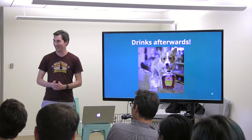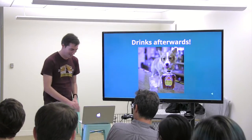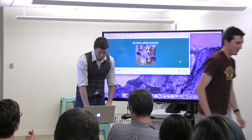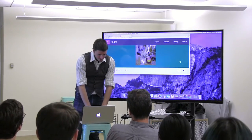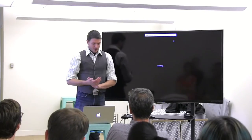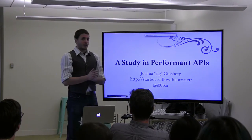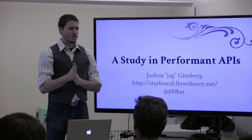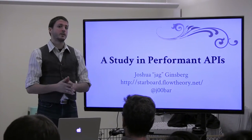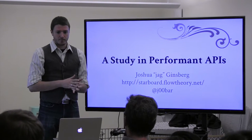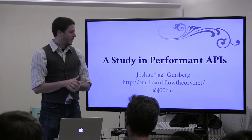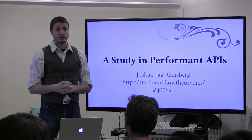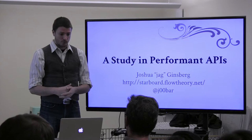Without further ado, I'm going to turn it over to Jag. My name is Joshua Ginsberg. A lot of people know me as Jag. I'm the principal Python Architect at Celerity, a business acceleration consultancy based out of Tysons. We get to do a lot of cool projects from a lot of the really biggest shops in town — the ones that do Python, my group gets to play with.